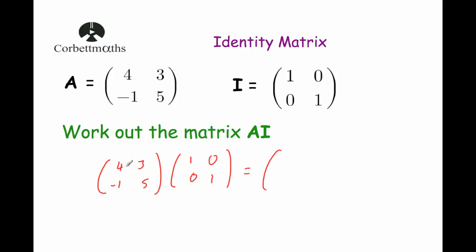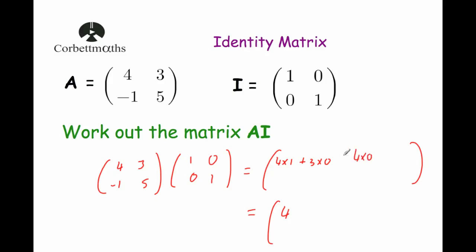First of all we're going to multiply the first row by the first column. So we're going to do 4 times 1, plus 3 times 0. That's going to be 4 times 1 is 4, 3 times 0 is 0, so 4 plus 0 equals 4. Next, we're going to do the first row times the second column: 4 times 0 plus 3 times 1. Well, 4 times 0 is 0, 3 times 1 is 3, and 0 plus 3 equals 3.